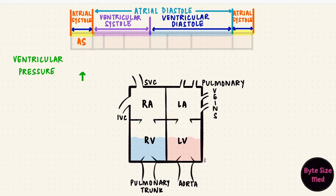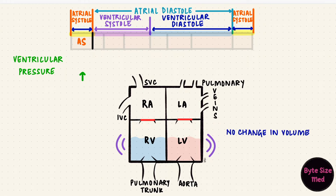Then the atrioventricular valves close. With all valves closed, the ventricles contract. Blood doesn't leave the chamber, so the volume does not change — that's isovolumetric contraction. The volume doesn't change, but the muscle is contracting, causing the pressure to rise. The pressure rises during isovolumetric contraction.